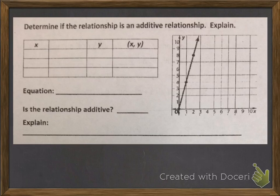Determine if the relationship is an additive relationship. Explain. This time we are given a graph, and then we have to fill out a table and figure out what the equation is and whether or not it is additive. So let's look at our graph. Our first ordered pair that I see is 0, 0.